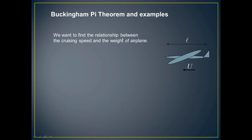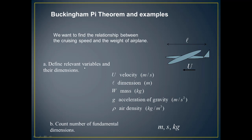If you want to find the relationship between the cruising speed and the weight of a plane, the aeroplane variables will be weight and speed. You only have relevant variables like U, L, mass — mass is signified with W — acceleration due to gravity, and density. All these are significant parameters. But how can we have a relationship between the speed of the aeroplane and the weight of the aeroplane?